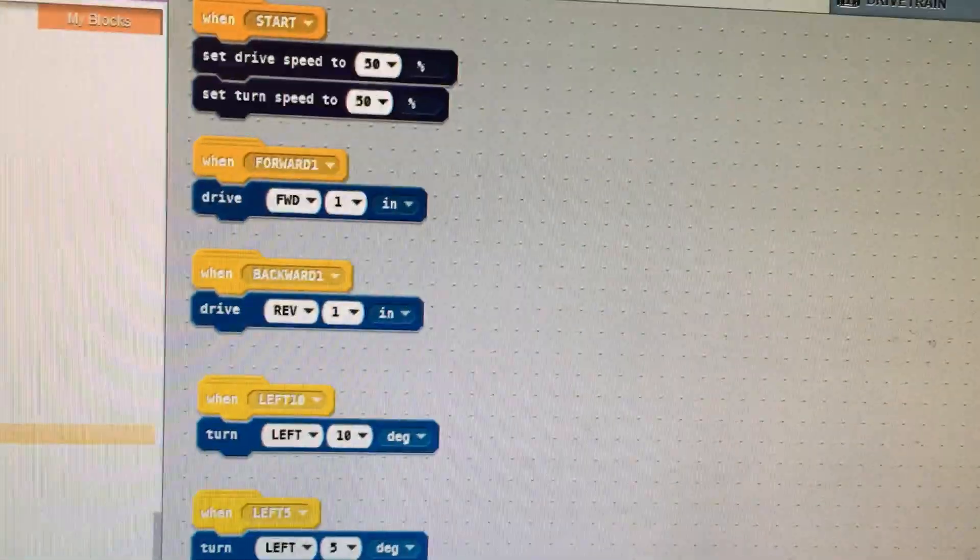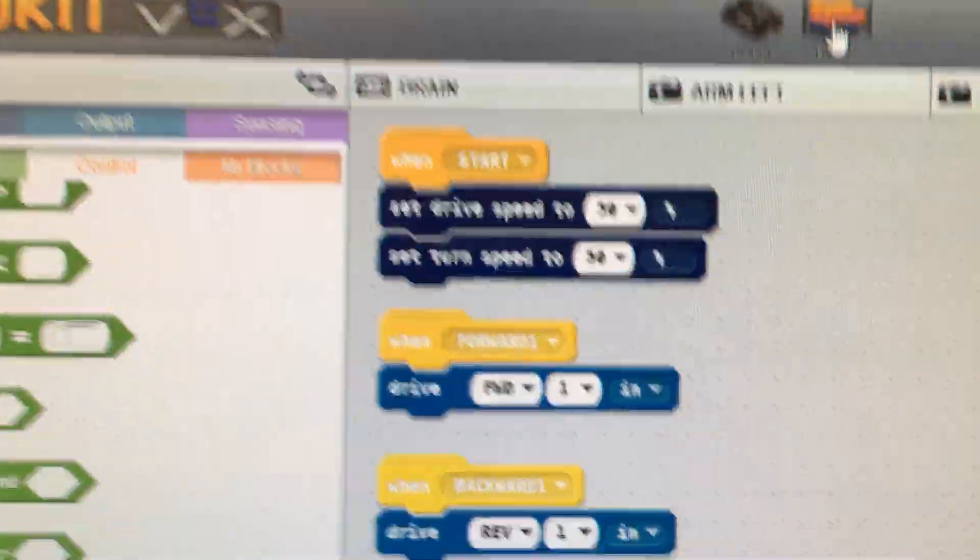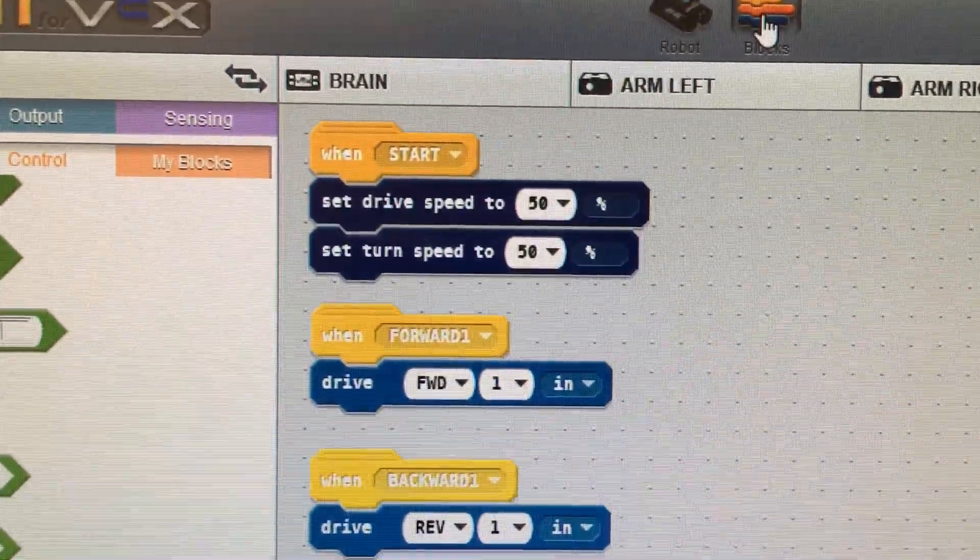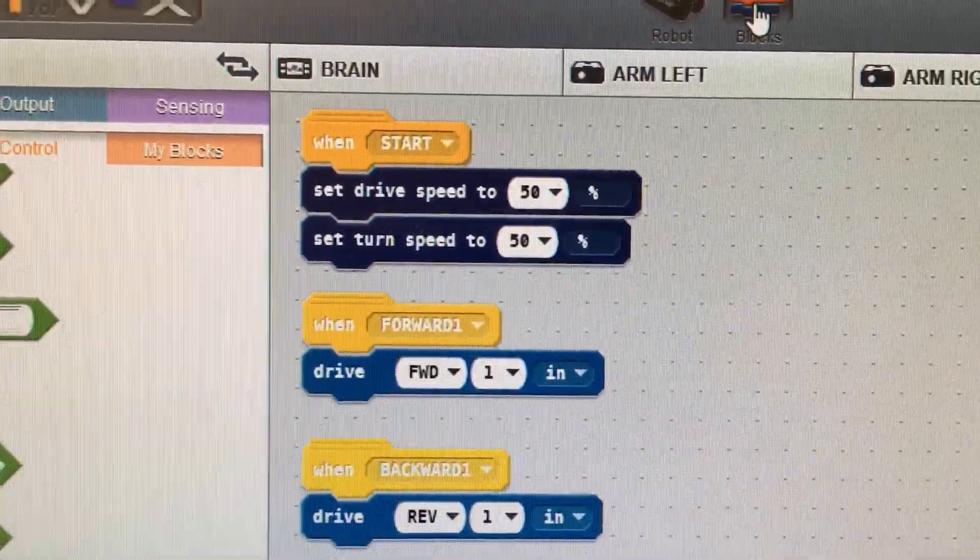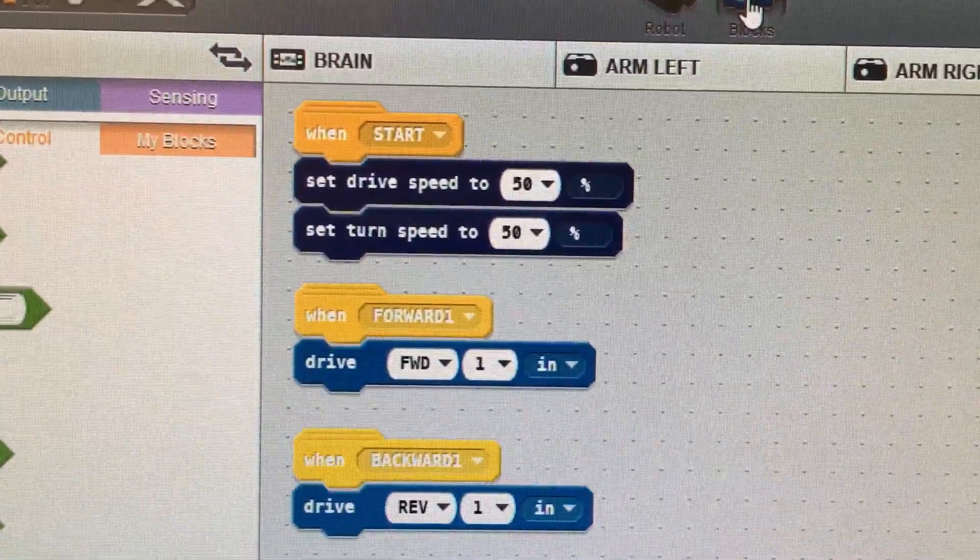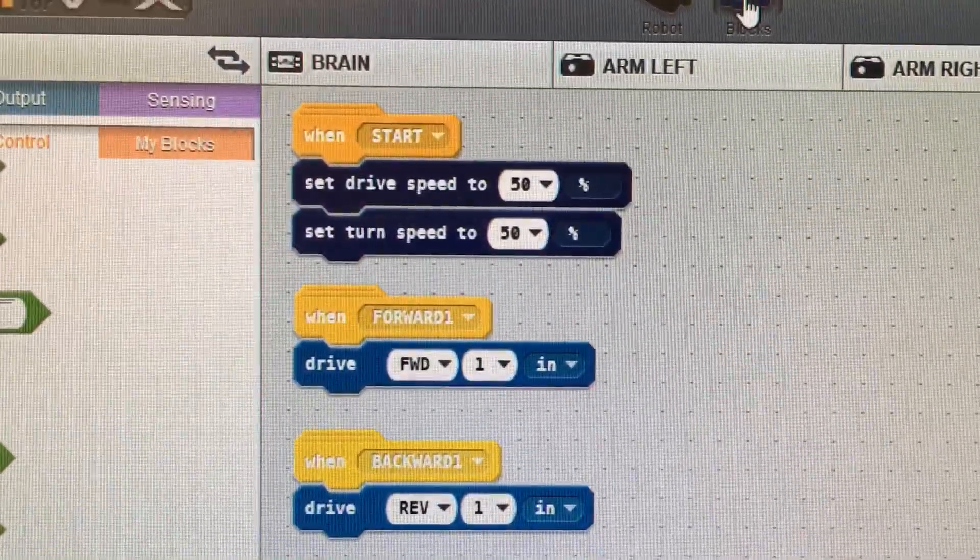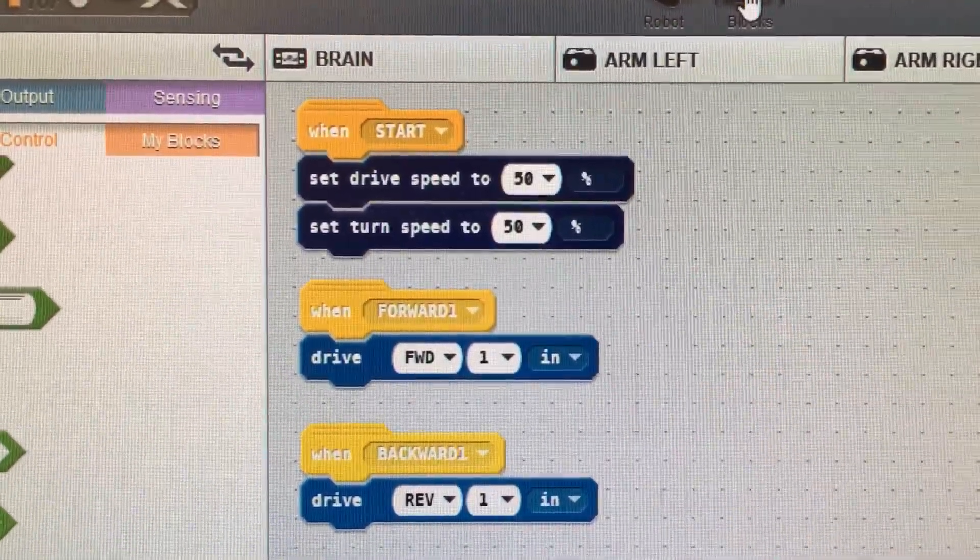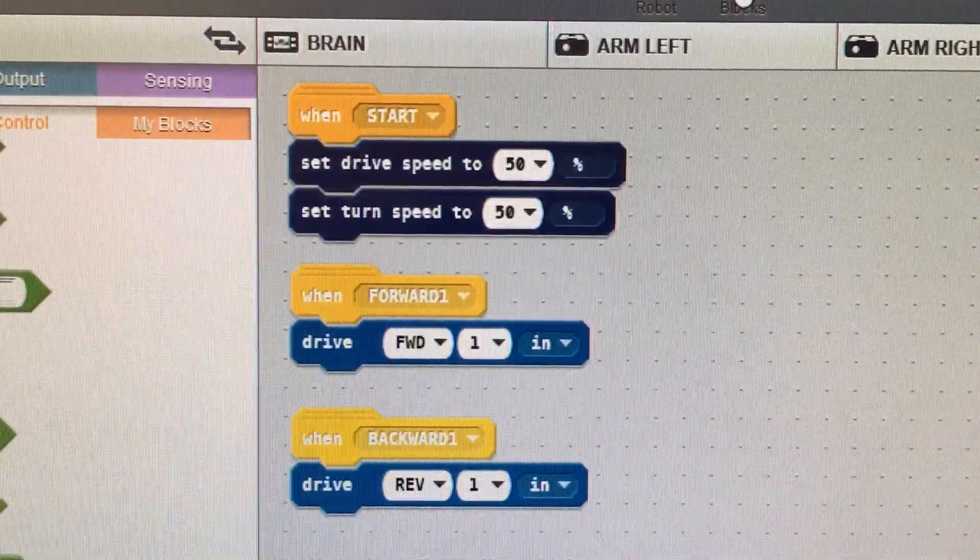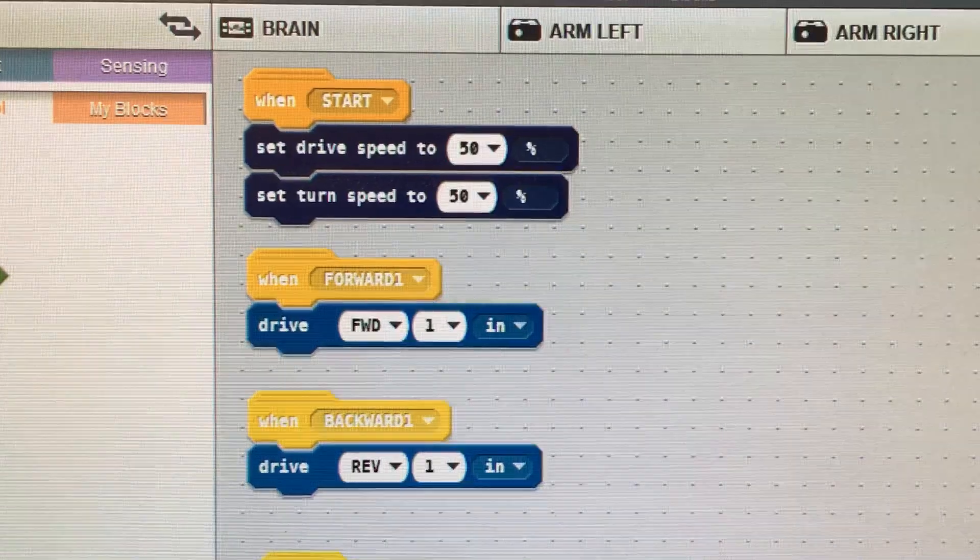Now let's come and look at our drivetrain code. When start, we set our speed, we set our turn speed. If you have a robot that turns too quickly or moves too quickly, you're going to have difficulty with autonomous. The robot is going to be twitchy. It's going to be hard to control. It's going to be inconsistent. So it's not going to run the same every time you run it.